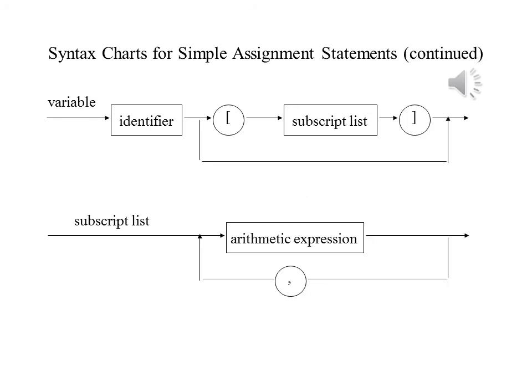The diagrams on this slide are for a variable and a subscript list. In the diagram for a variable, it indicates that we can have an identifier, possibly followed by a subscript list in square brackets, but there will be only one such list.